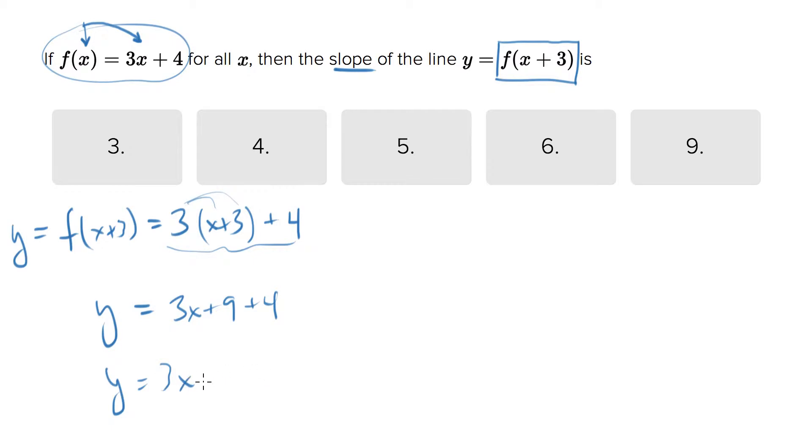Or y = 3x + 13. So the slope can be read here: the 3. The y-intercept is the 13. What do they ask for? The slope. So that is the first answer choice.